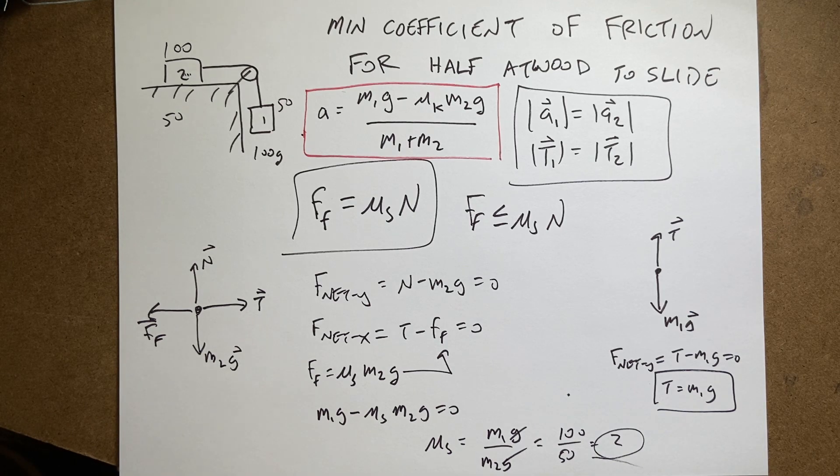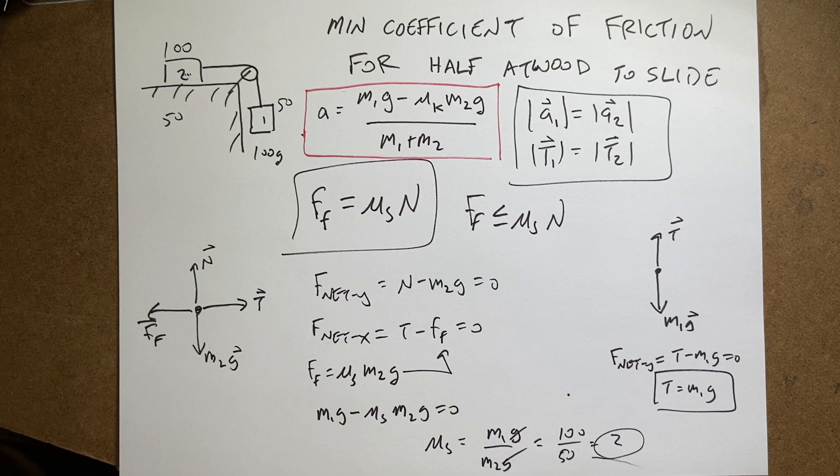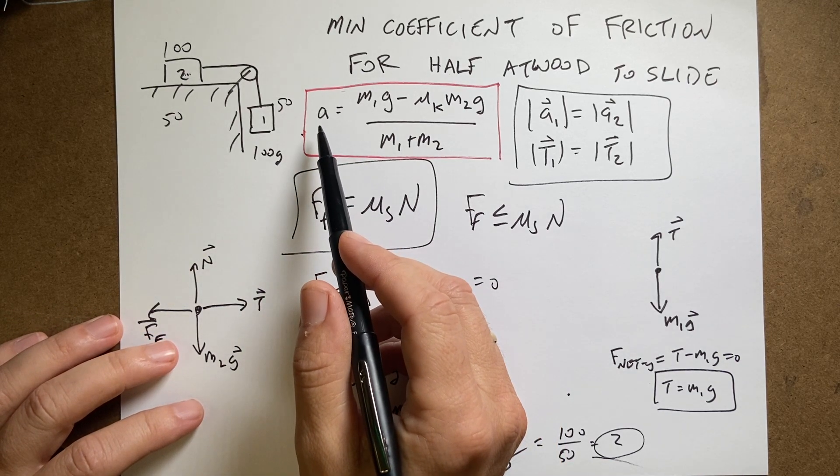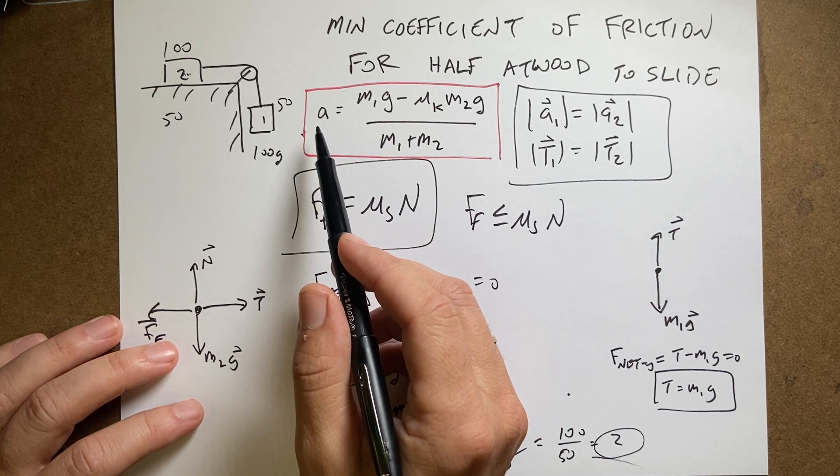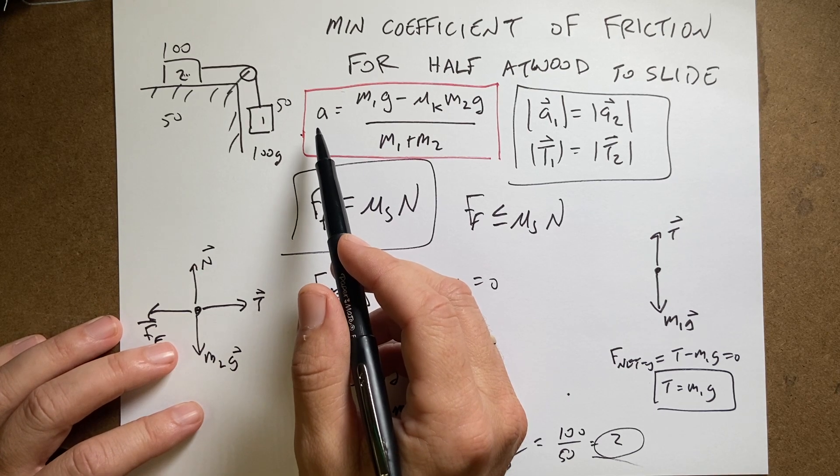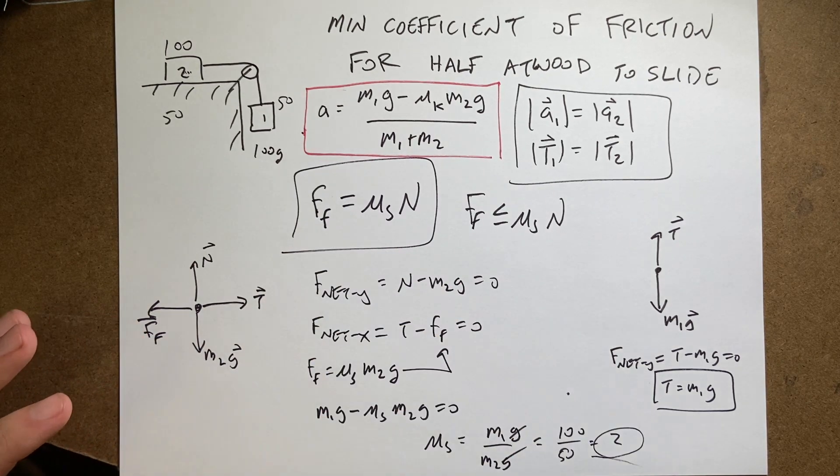I guess the next real question is, what about on an inclined half Atwood machine? I'll do that problem. I'll find the acceleration for a half Atwood machine with incline and friction. That's what I'll do next.